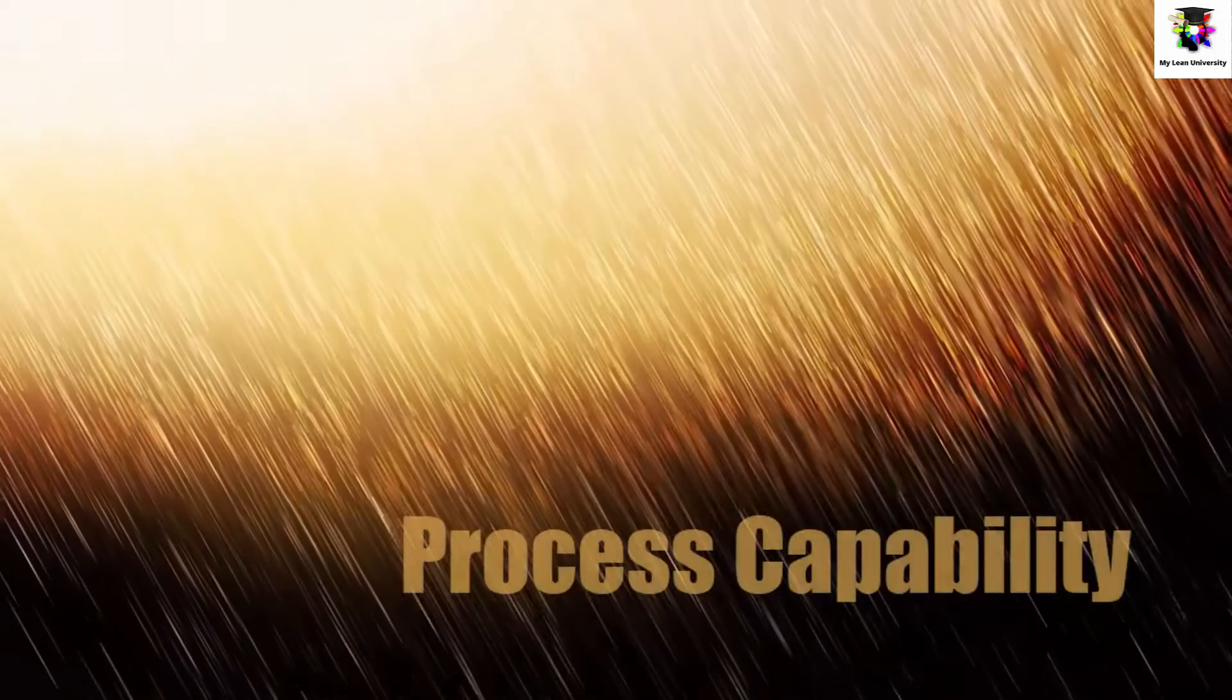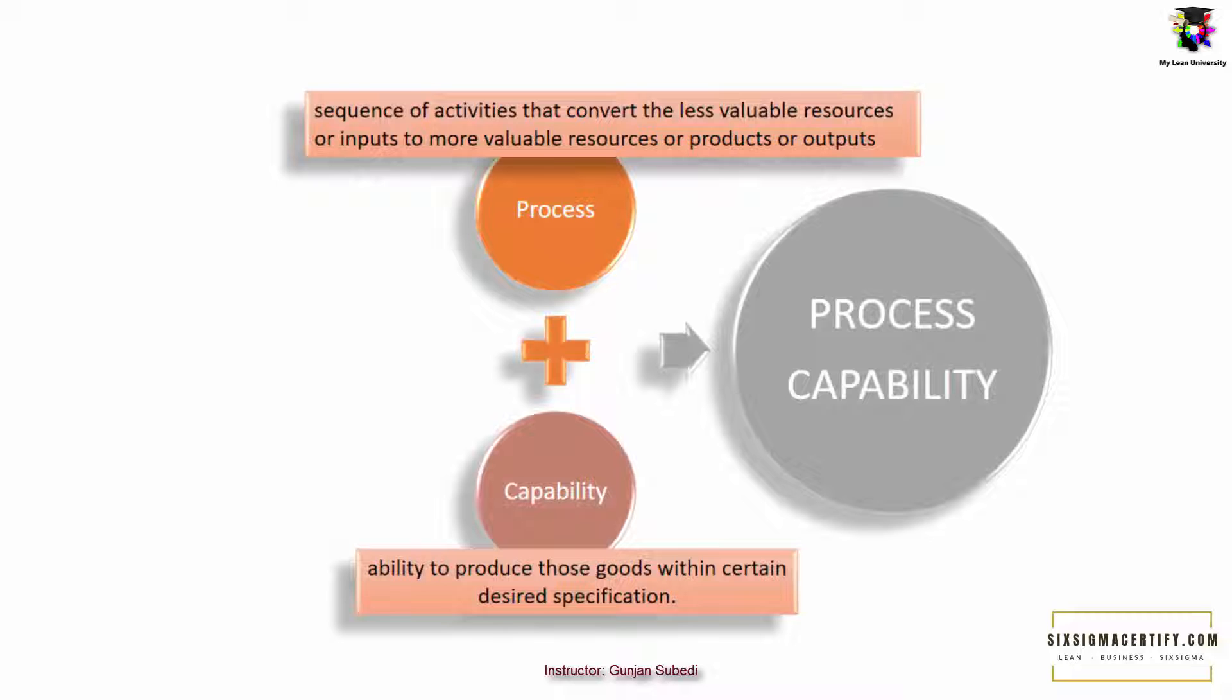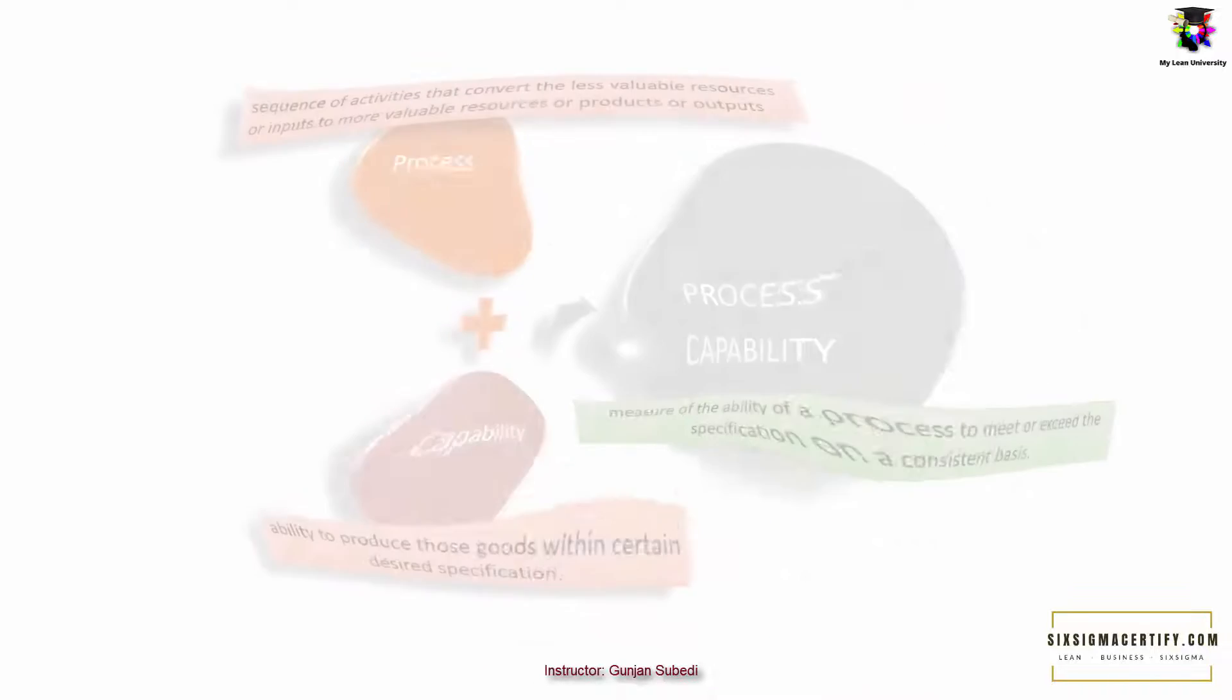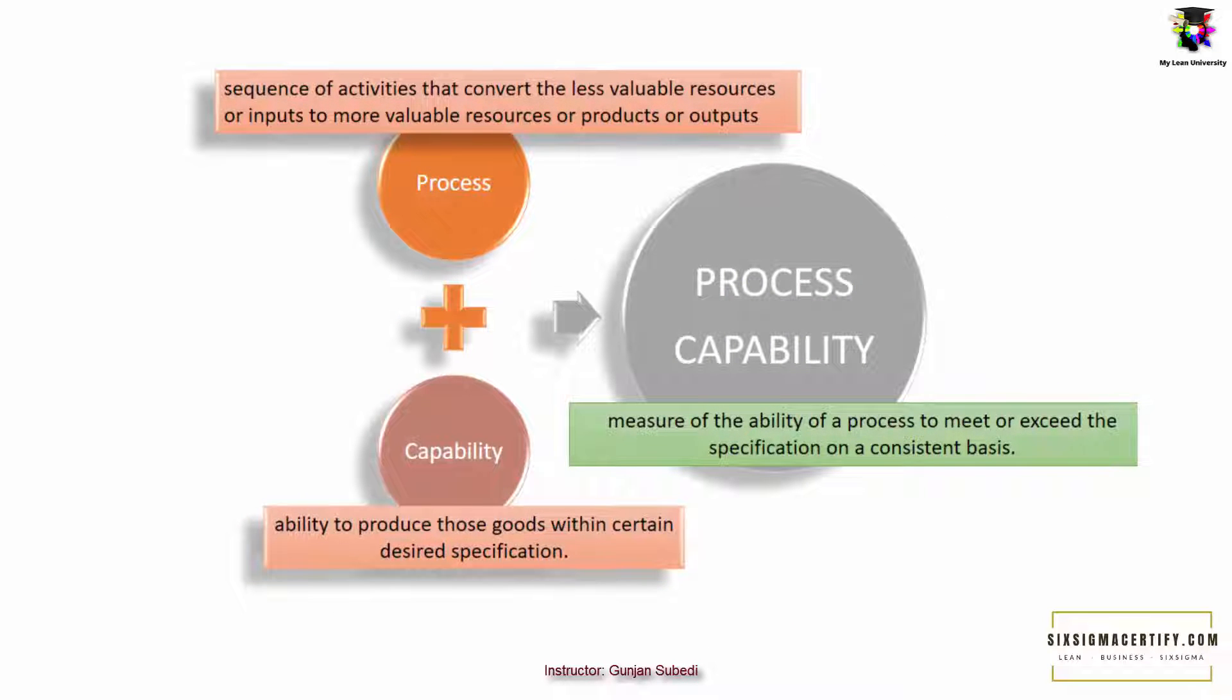In this lecture we are going to study about process capability. Process capability consists of two words: process and capability. Process is a sequence of activities that convert less valuable resources or inputs to more valuable resources or products or outputs. Capability is the ability to produce those goods within certain desired specifications. So process capability is the measure of the ability of a process to meet or exceed the specification on a consistent basis.